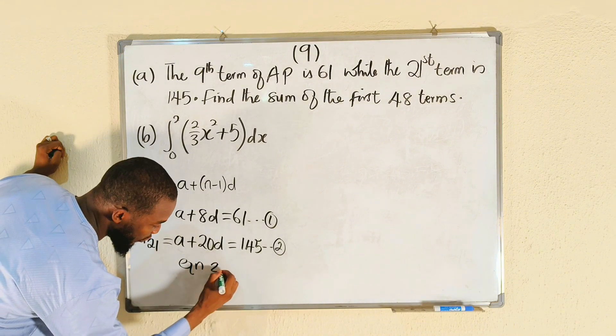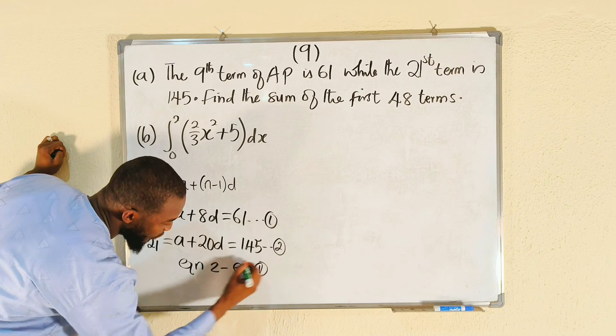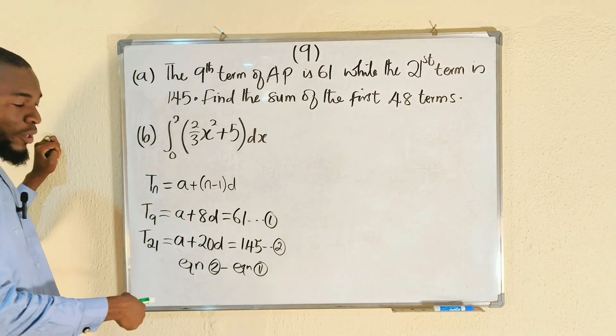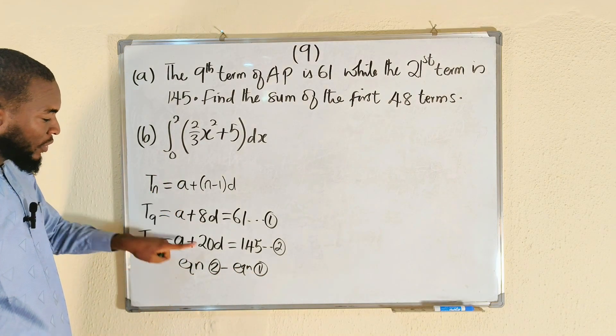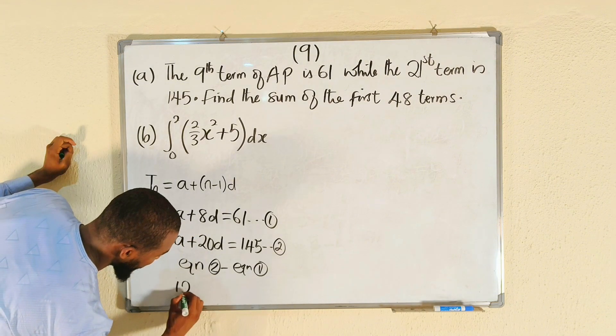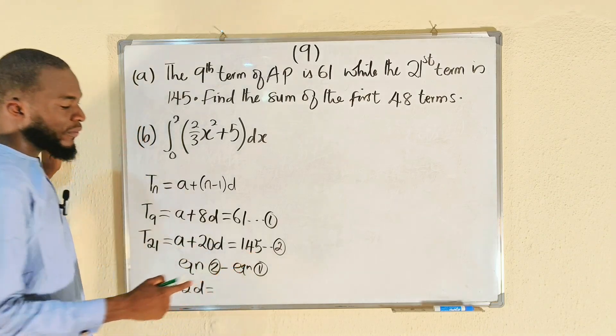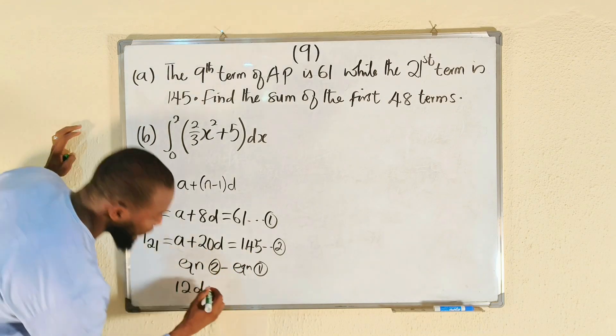Equation 2 minus equation 1. We're subtracting equation 1 from equation 2. a minus a is 0, 20d minus 8d is 12d. This is equal to 145 minus 61, that is 84.